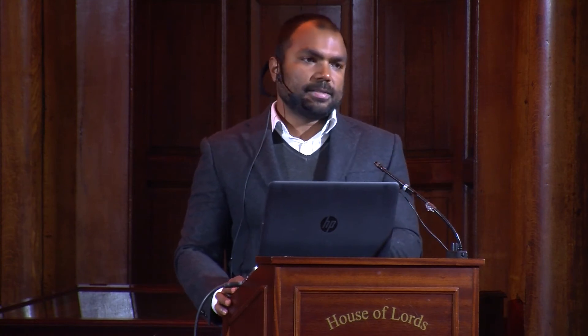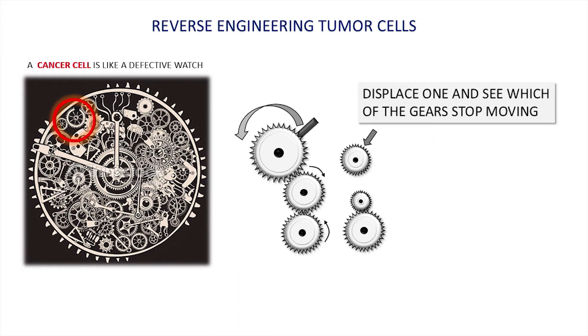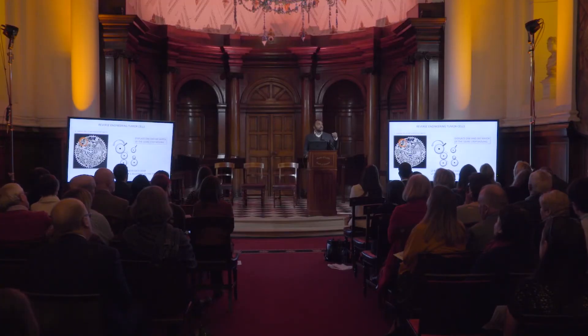The process of understanding the design principles of a machine is called reverse engineering. I'll explain how we reverse engineer cancer cells using a simpler system of few gears connected to each other. If you turn the top lever, the gears move. Let's say you don't know how these gears are connected — you want to find that out. So what you do is you remove one gear and then measure which of the other gears stops moving. The ones that stop moving are connected to the one you removed. If you keep doing this with each gear, you can figure out how they are all connected to each other.